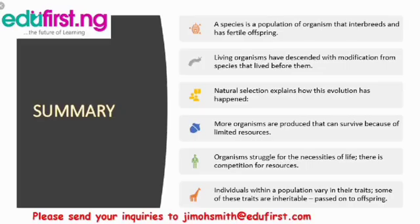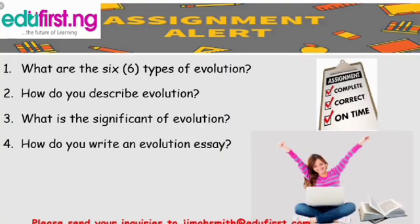In summary, a species is a population of organisms that interbreeds and has fertile offspring. Living organisms have descended with modification from species that lived before them. Natural selection explains how this evolution has happened. More organisms are produced than can survive because of limited resources, so organisms struggle for the necessities of life and there is competition for resources. Individuals within a population vary in their traits, and some of these traits are inheritable and can be passed on to their offspring. This is the end of our lesson.